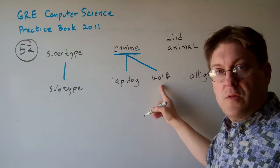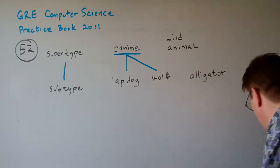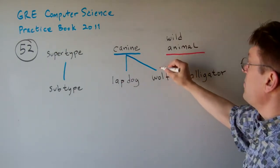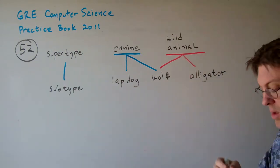And a wolf also may be a canine. Now we also have this other supertype, say wild animal. A wolf is a wild animal and an alligator is a wild animal.